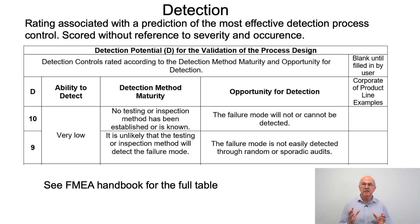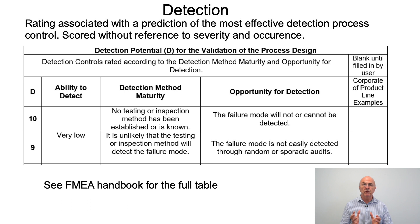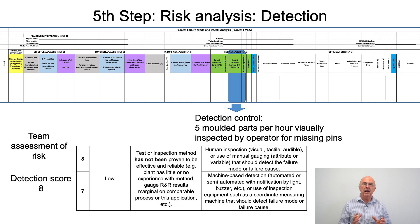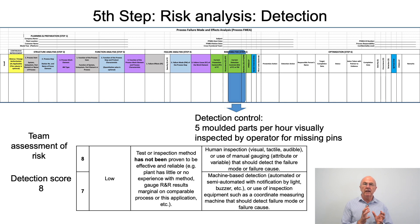Now let's look at detection from the case study perspective. The detection control is that we take five molded parts per hour and check them visually for missing pins. The detection rating is associated with a prediction of the most effective detection control, and is scored without reference to severity and occurrence. The team reviewed the detection ranking table and came up with a detection score of 8, reflecting that human inspection of the product is being performed.